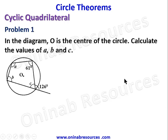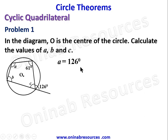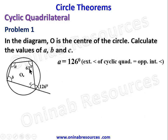Problem 1: in the diagram O is the center of the circle; calculate the values of A, B, and C. Going alphabetically, A is immediately opposite to C, and the exterior angle at C is 126 degrees. Therefore A equals 126 degrees — that is, the exterior angle of a cyclic quadrilateral equals the opposite interior angle.